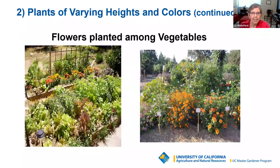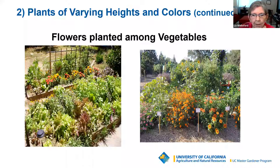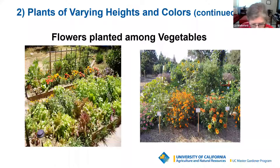Here's another example from our demonstration garden in Walnut Creek. Way back is sunflowers, in the middle right is gaillardia, in the middle it looks like marigolds. The plants we used were parsley, basil, cosmos, marigolds, zinnias, sunflowers, and lavender. We also have a special bed with pollinator plants.